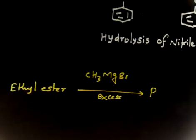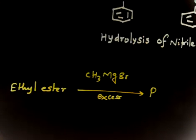Now let us discuss the next problem. This is again an easy one. You have to take an ethyl ester reacting with CH3MgBr, and this Grignard reagent is taken in excess.